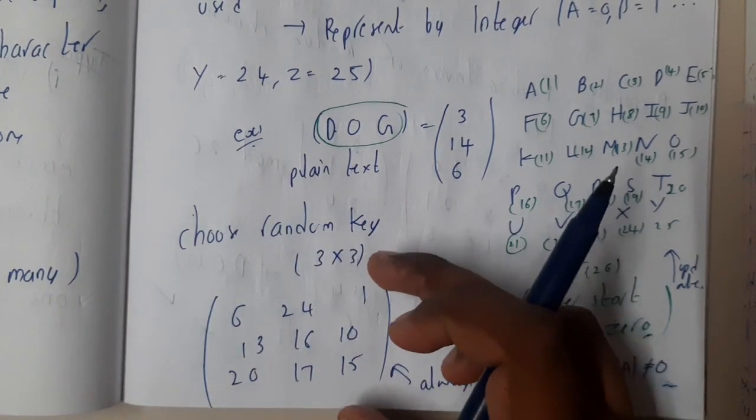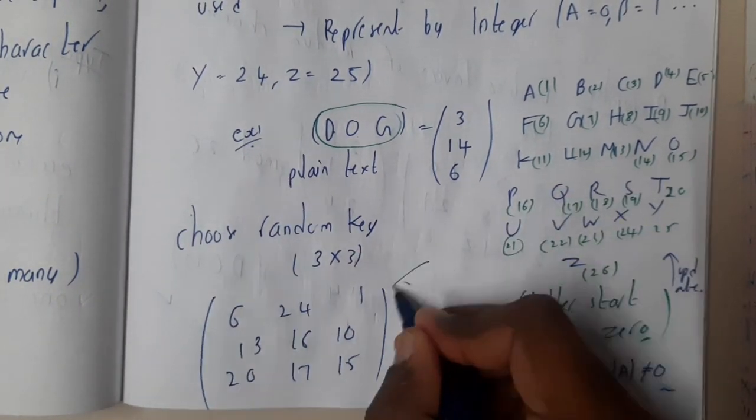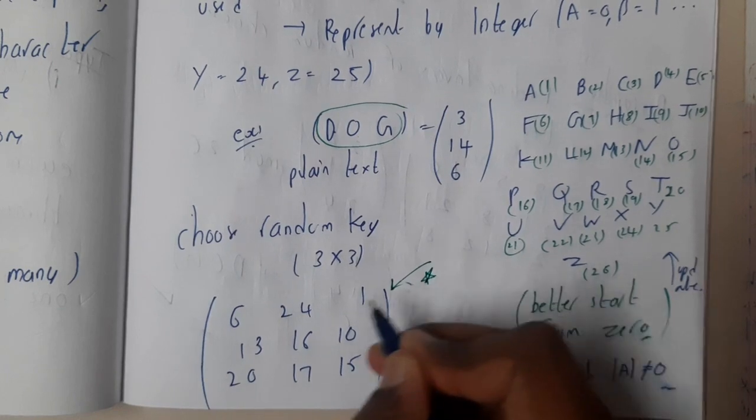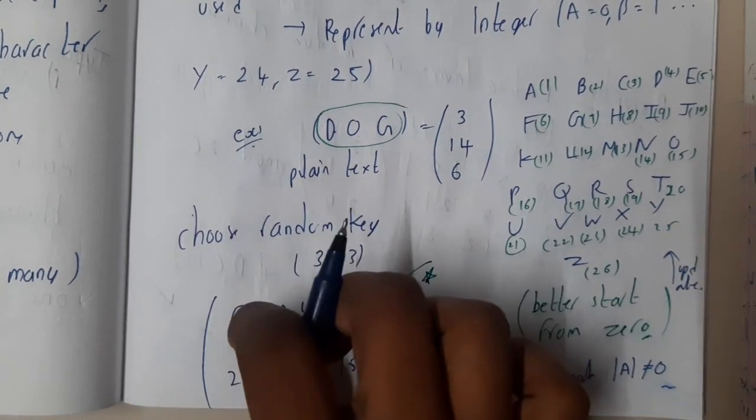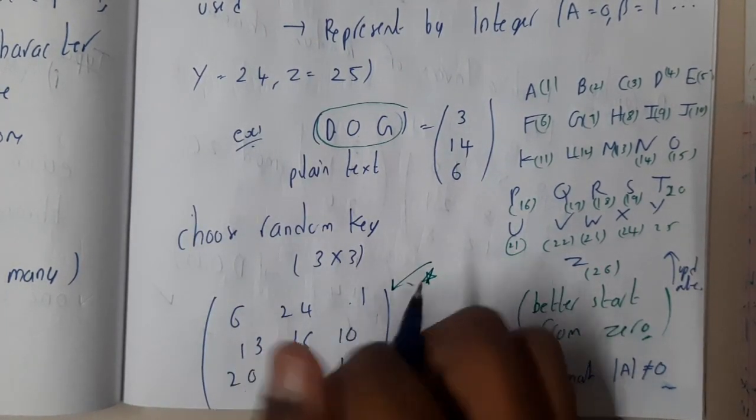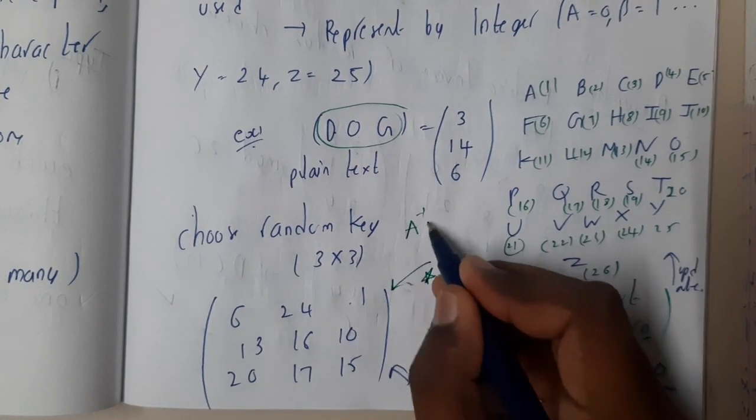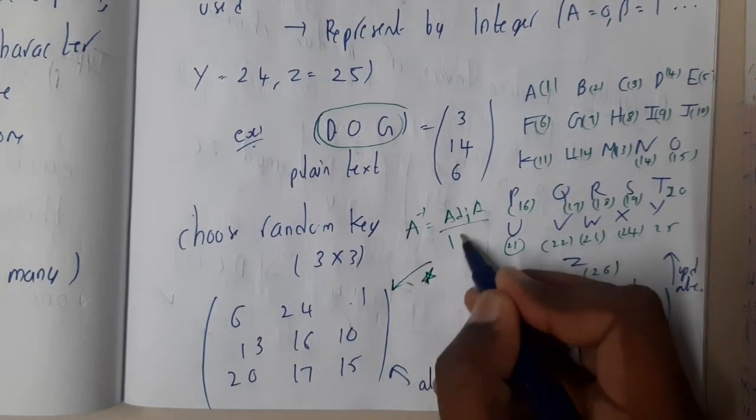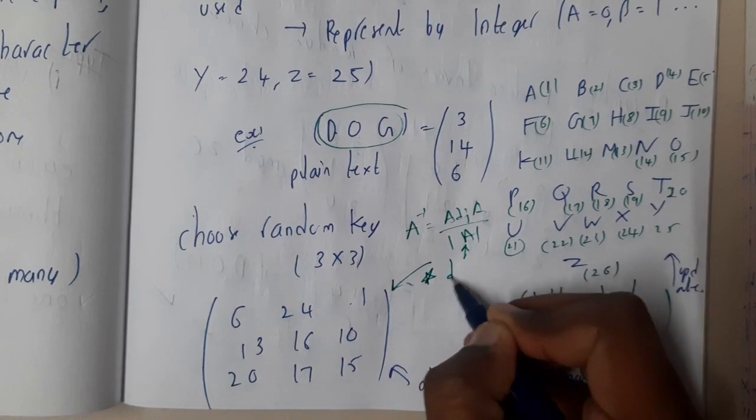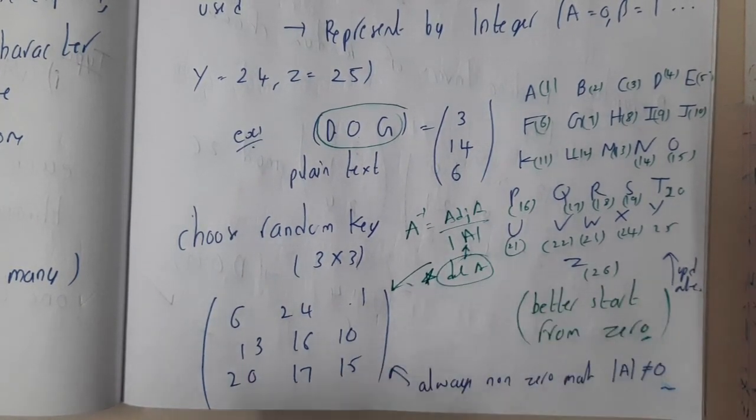Now we will be generating a random key. This random key generation is really important because for this you will be doing an inverse operation of matrix. Inverse is nothing but adjacent of A by determinant of A.